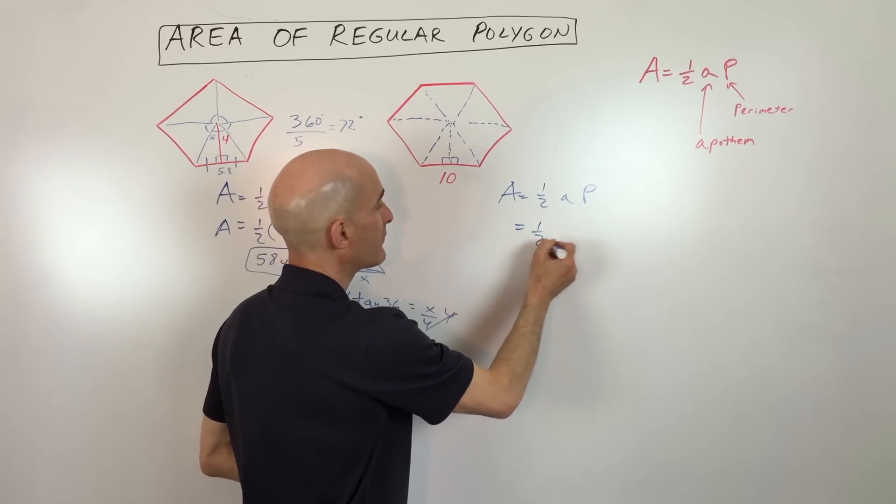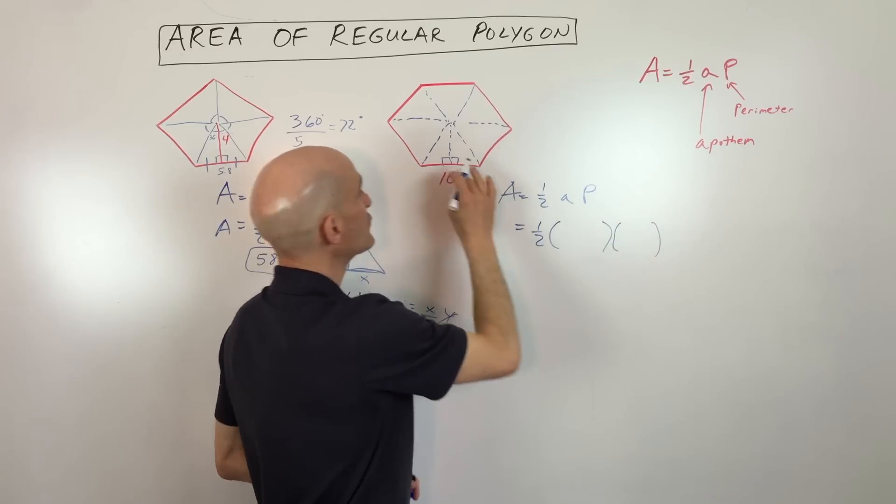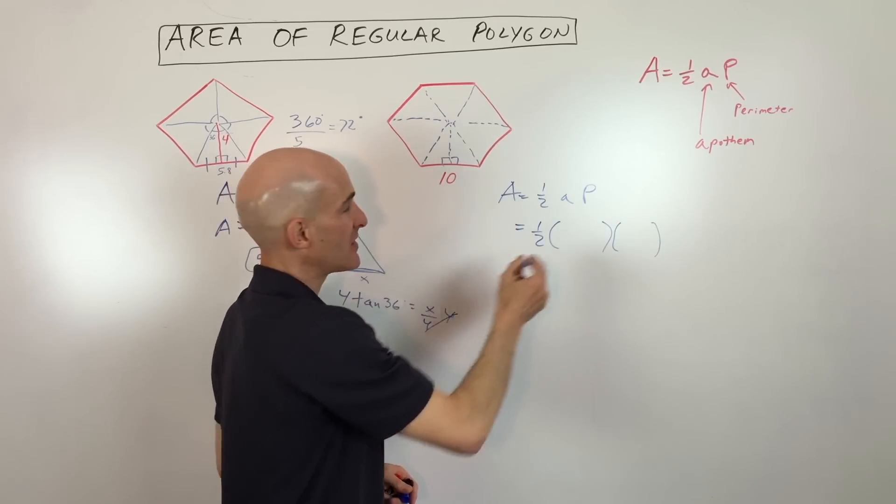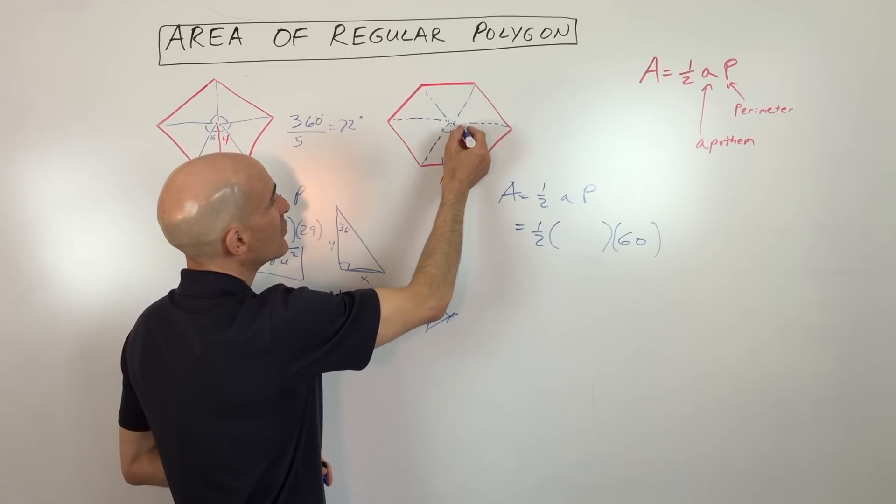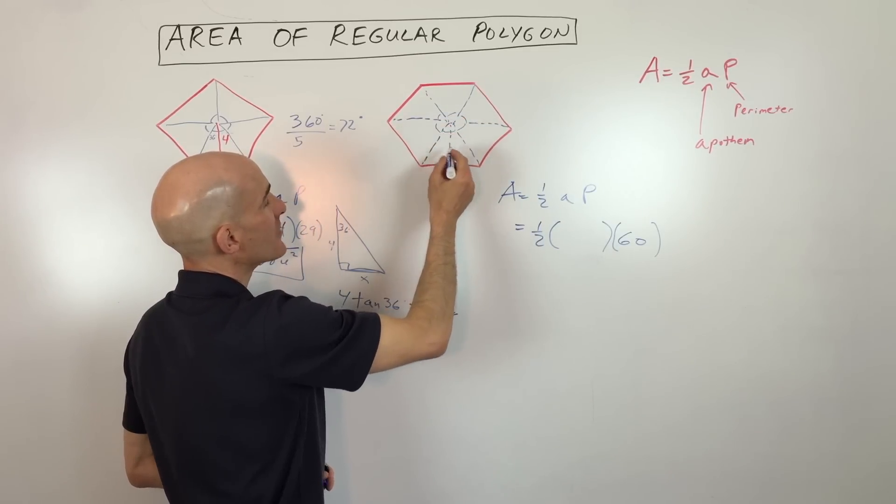So we've got one half. The perimeter is going to be 10 times 6. So that's going to be 60. Now for the apothem, we need to find out what the central angle is for each of these triangles, right?